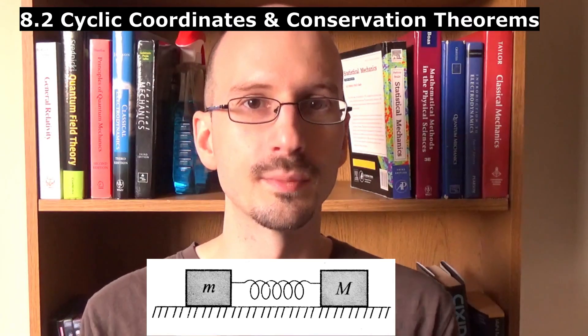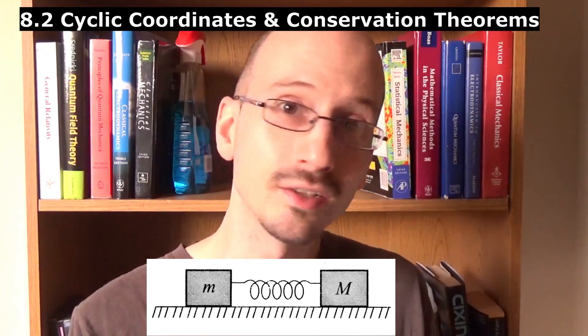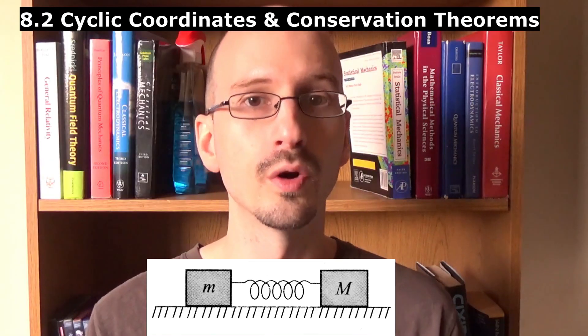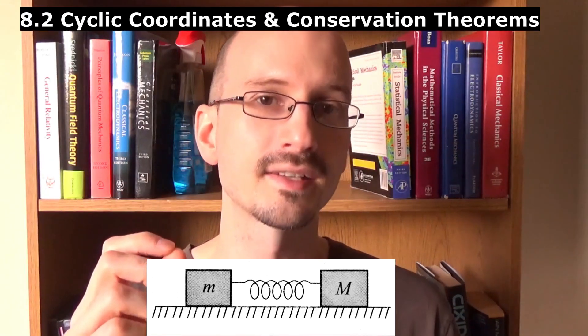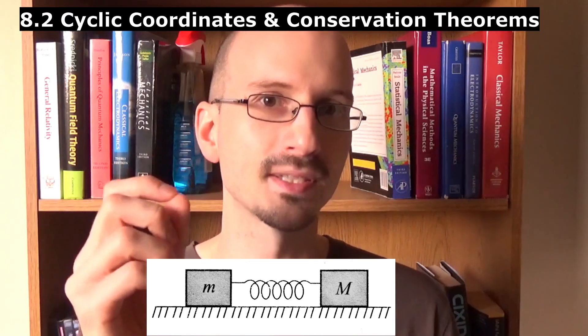But if our coordinate is the position of the first mass relative to the second mass, the Hamiltonian is still the energy, but it is not conserved. That is because in coordinates where we treat the second mass as if it's fixed, there is a fictional force that keeps it steady.